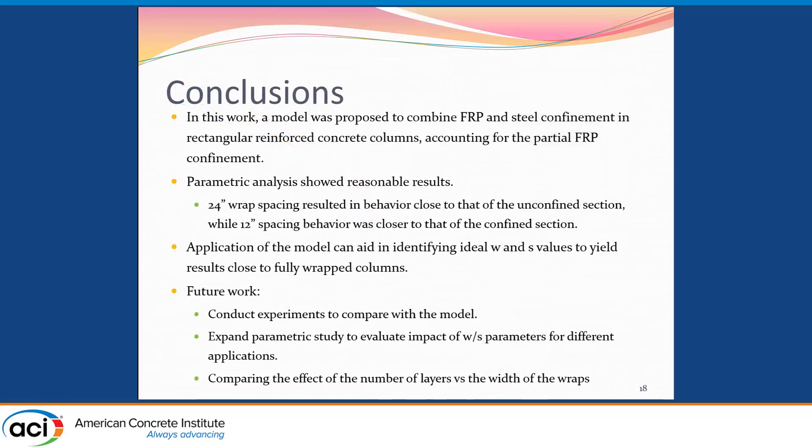Going into the conclusions, we derived a model that combines the effect of FRP and steel confinement in columns, and extended it so that it accounts for the partial effect of the confinement. Parametric analysis was performed. We varied the wrap spacing between 24 and 12 inches, and it was seen that 12 inches provided behavior closer to the confined, while 24 inches was much closer to the unconfined. Some applications we can propose for this model include identifying ideal W, the width of the wrap, and S spacing that would yield results close to the fully wrapped columns.